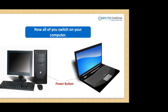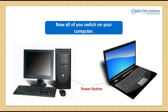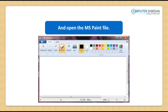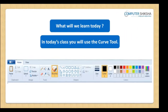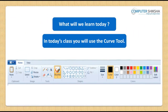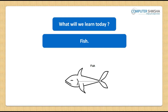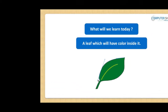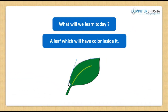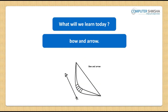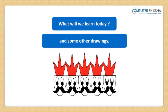Now all of you switch on your computer and open the Paint file. In today's class, you will use the Curve tool and make some more pictures like a scenery, fish, dolphin, a leaf which will have color inside it, bow and arrow, and some other drawings.